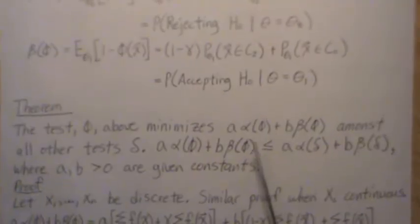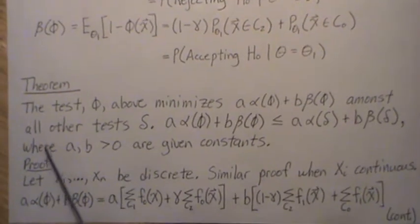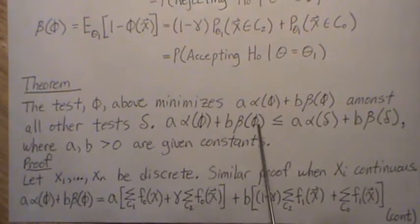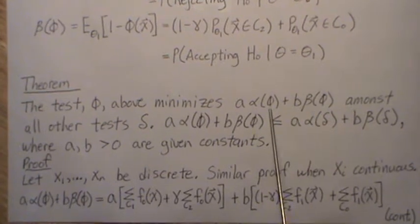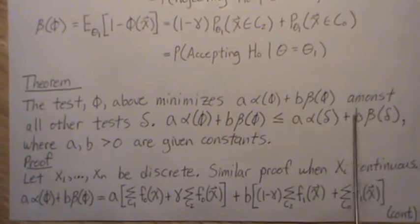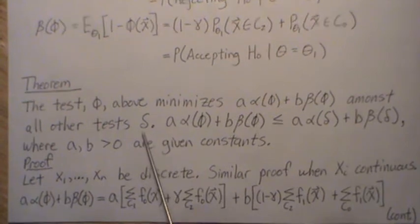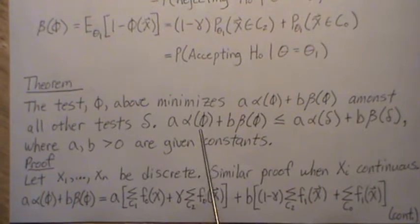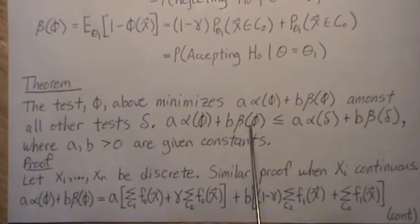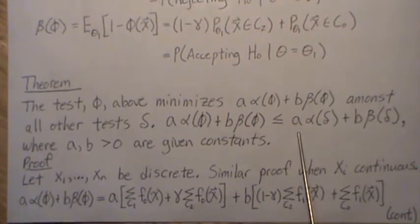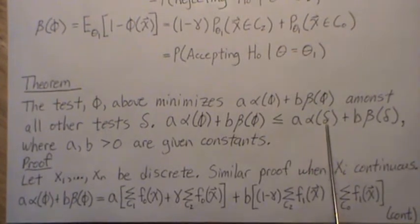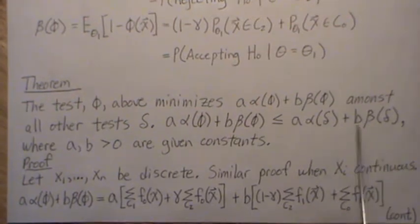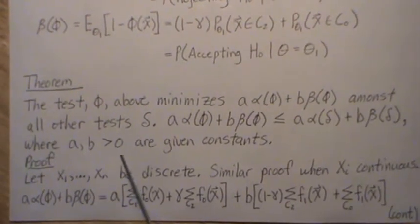The theorem that we're going to prove in this video is the test phi above minimizes this linear combination of the Type I and Type II errors amongst all other tests delta. So a times alpha of phi plus b times beta of phi is always less than this linear combination when we use delta: a times alpha of delta plus b times beta of delta. And of course, a and b are positive constants.